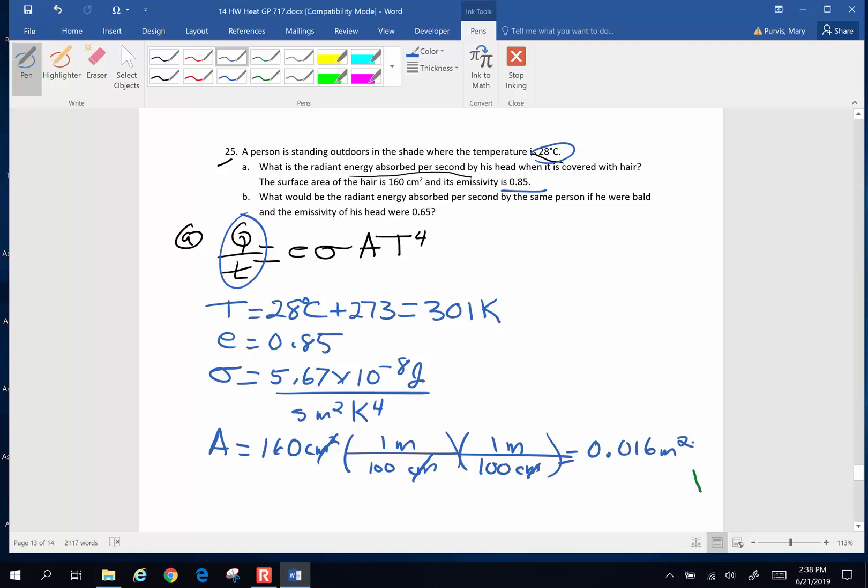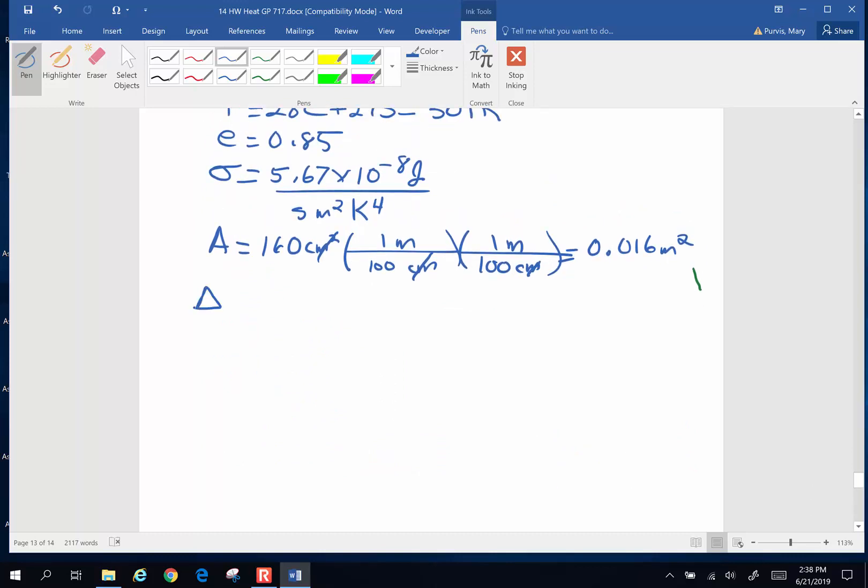So when I do all of this I think I'm ready to put my numbers in. Let's see what we get. Delta Q over delta T, which is energy per unit time, is going to be the emissivity 0.85 times Stefan Boltzmann 5.67 times 10 to the negative 8 joules per second meter squared Kelvin to the fourth power times the temperature 301 Kelvin. This just this bit is raised to the fourth power times the surface area 0.016.